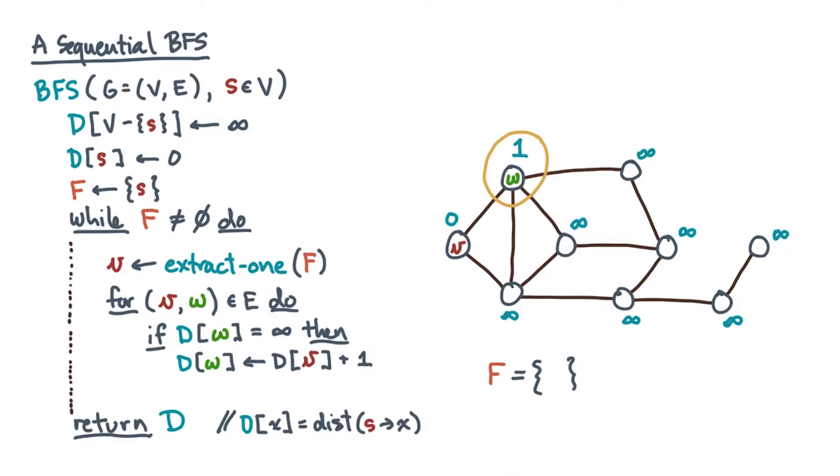In addition, if it didn't have a distance yet, then it wasn't visited. Therefore, we should throw w into the visited queue.